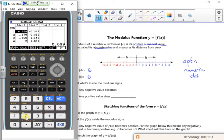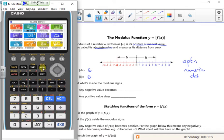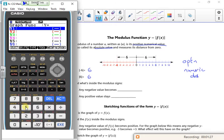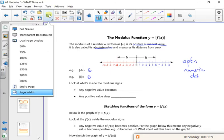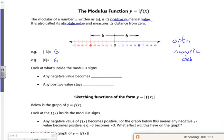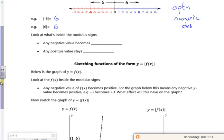So it's dead simple. Look at what's inside the modulus sign. Any negative value becomes positive. Any positive value stays positive.